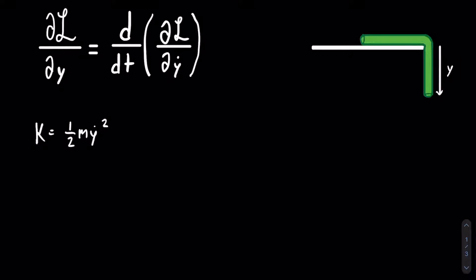Also needed to find the Lagrangian is the potential energy. In this case, there is only gravitational potential energy. This will take a little more work because at every point on the rope there is going to be a different gravitational potential energy, so we can use some calculus. We can make a slice which is parallel to the table, and this slice of infinitesimally small width will have a gravitational potential energy of dU. We can then set the zero point for the gravitational potential energy to be the table, so all of our potential energy is going to be negative.